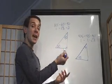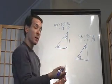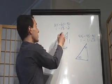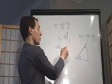30 degrees is the smallest angle, so across from it is the smallest side, which is 1. 90 degrees is the biggest angle, so across from it is the biggest side, 2. And the last one that leaves us with root 3.